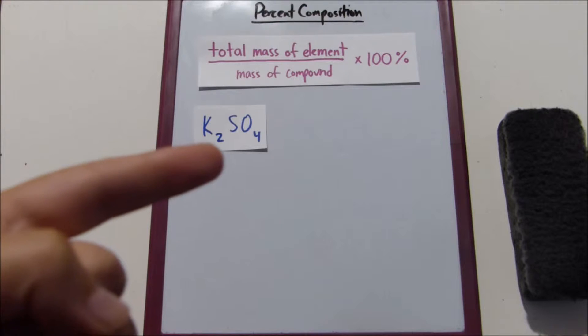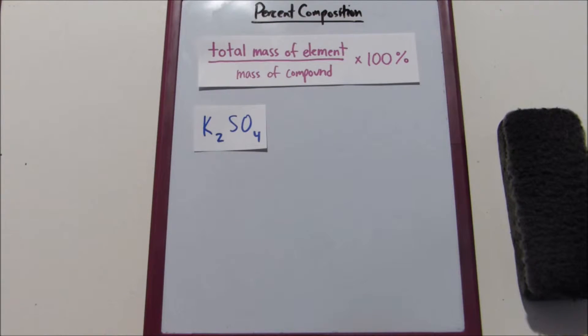So we have four oxygen atoms here. So what we're going to want to do is we're going to want to take the mass of one oxygen atom and multiply it by 4. And that would be our numerator here, the total mass of the element.